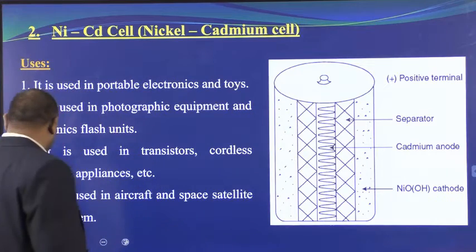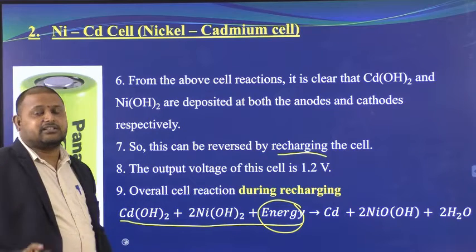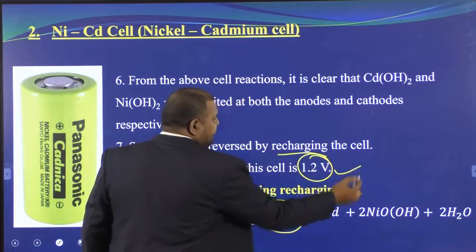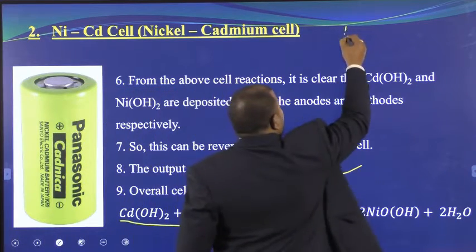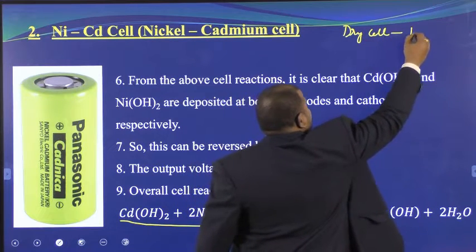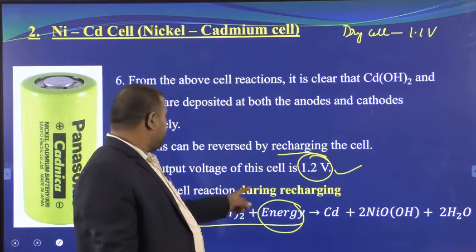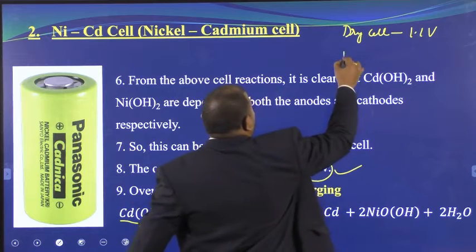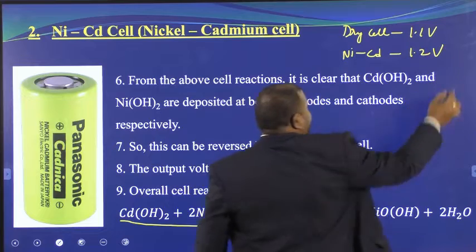The output voltage of the nickel cadmium cell is 1.2 volts — you should never forget this. For comparison, a dry cell gives 1.1 volts. So: dry cell = 1.1 V, nickel cadmium cell = 1.2 V.